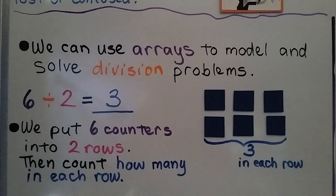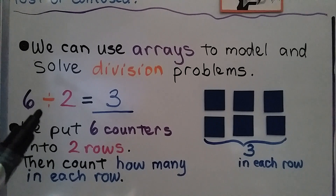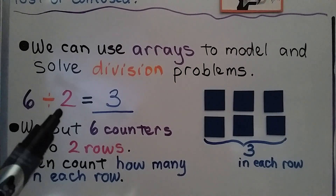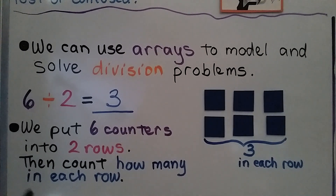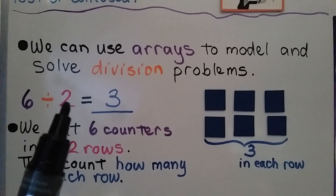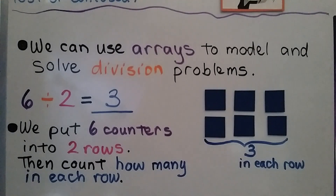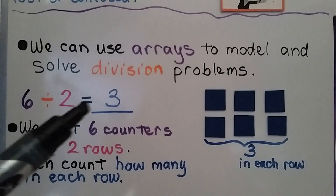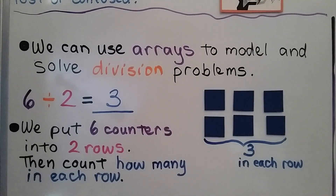Here our equation says 6 divided by 2. We put 6 counters into 2 rows, then count how many are in each row. We have 3 in each row, so we know the answer. The quotient is 3.